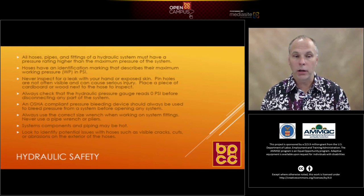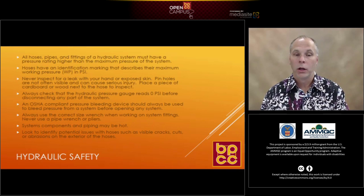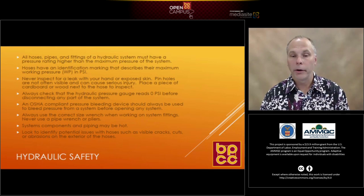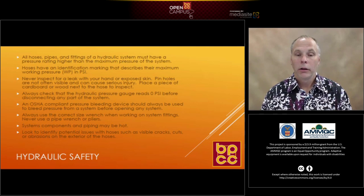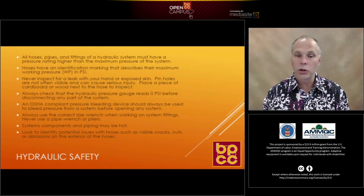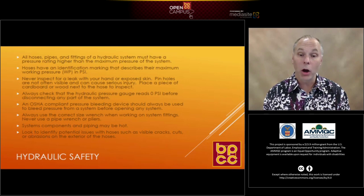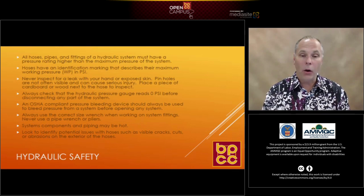Hoses have identification markings on them — you'll see 'WP' followed by a value, such as WP 45 PSI, which tells you the working pressure of that hose is 45 PSI. Make sure you're not overloading that. When inspecting for leaks, don't use your hands — the hydraulic fluid is something you don't want on your hands, and it may be hot or under great pressure, so you don't want hot oil or pressurized fluid spraying on you.